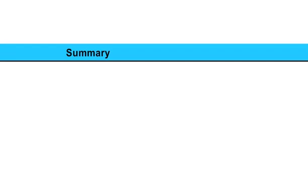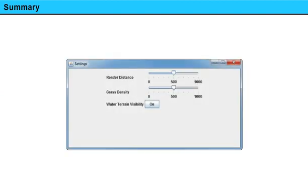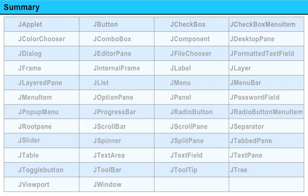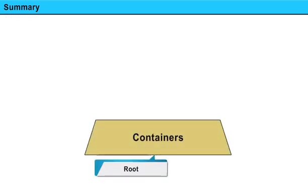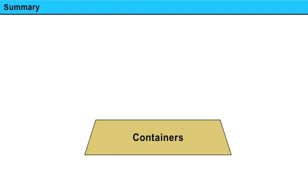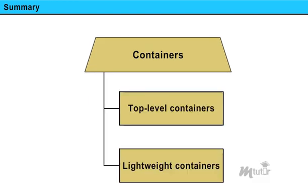Summary. Swing GUI provides two key items called Components and Containers. A component is an independent visual control such as a slider or a push button. A container is a root for an application; all the other components are added to that root and it forms a hierarchy. The containers are of two types: top-level containers and lightweight containers.